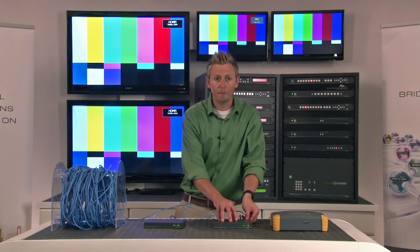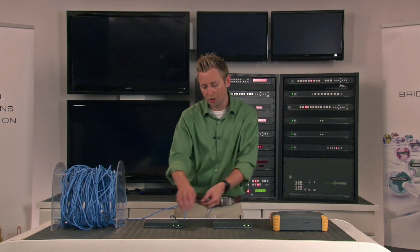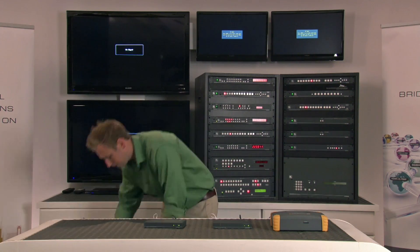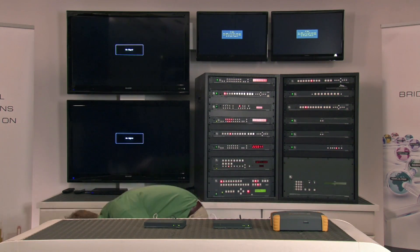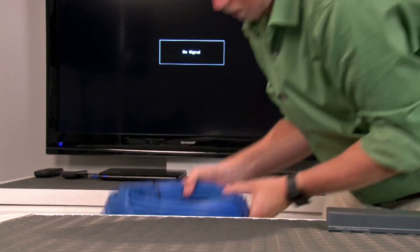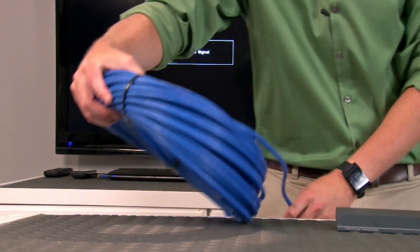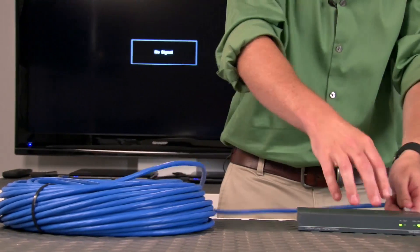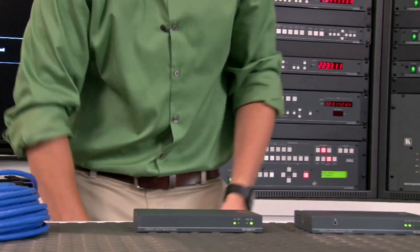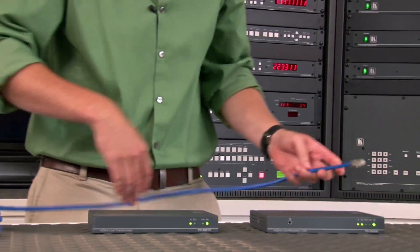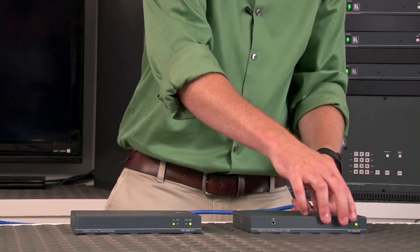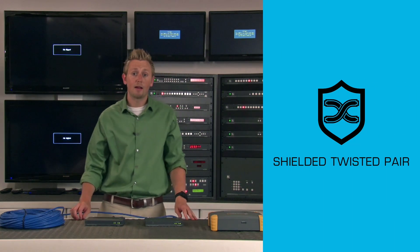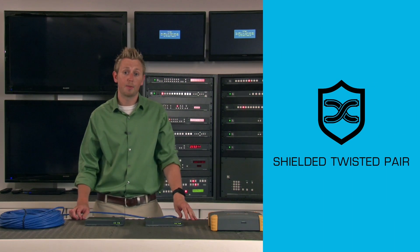Now, bear with me while I swap out this unshielded twisted-pair cable for a shielded one. Here's a piece of shielded twisted-pair cable that is zip-tied and bound pretty tightly. But because the cable has an overall shield, it eliminates crosstalk and allows the video signal to pass.